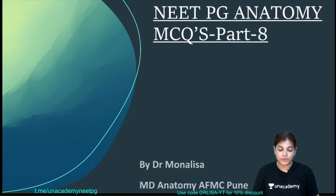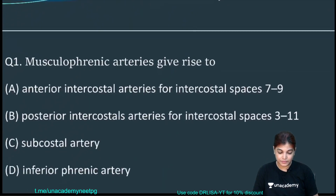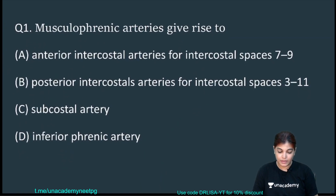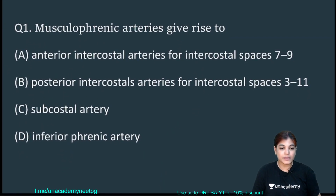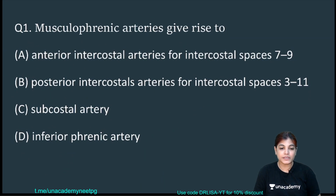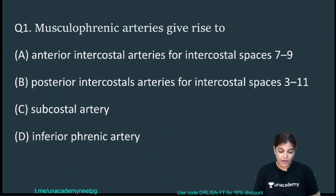Starting with the first MCQ: the musculophrenic artery gives rise to which of the following? Options are: (A) anterior intercostal arteries for intercostal spaces 7 to 9, (B) posterior intercostal arteries for intercostal spaces 3 to 11, (C) subcostal artery, and (D) inferior phrenic artery.